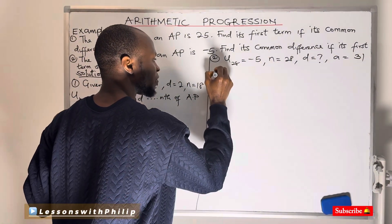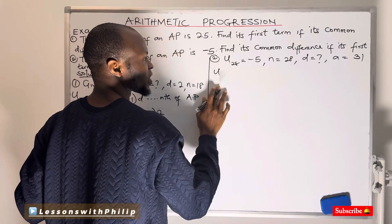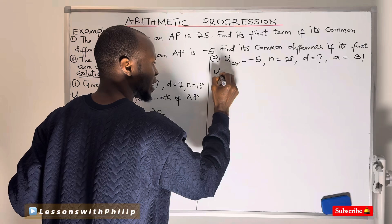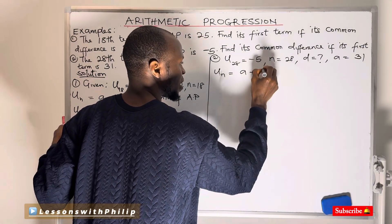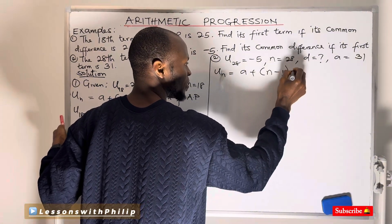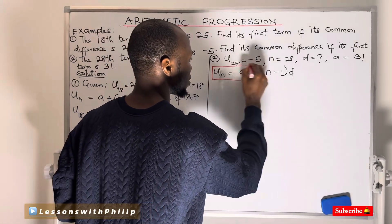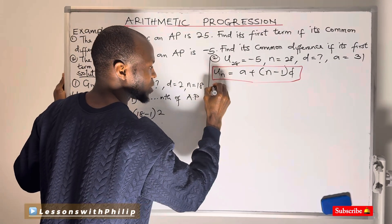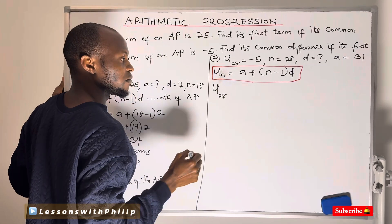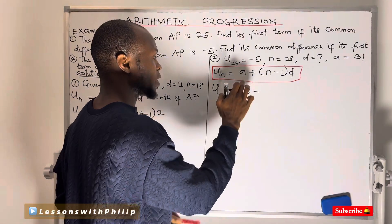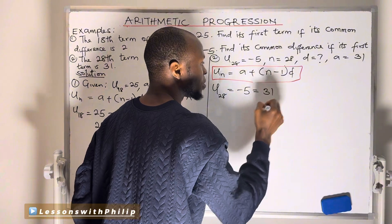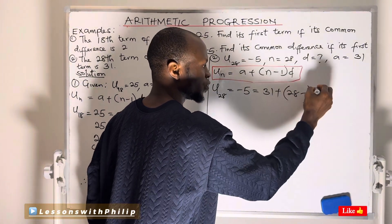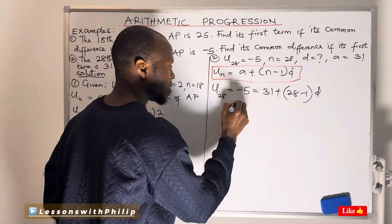Why do I know I need to use this formula? Because I must find the common difference, and the only sequence that has a common difference is an arithmetic progression. That's why I'm using the nth term of an AP. The general formula for the nth term of an AP is very important — please don't forget it. My n is 28, the 28th term is −5, my first term a is 31, and my common difference d is unknown — that's what I want to find.